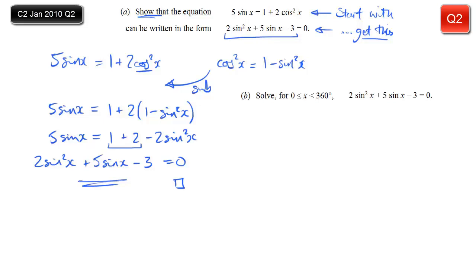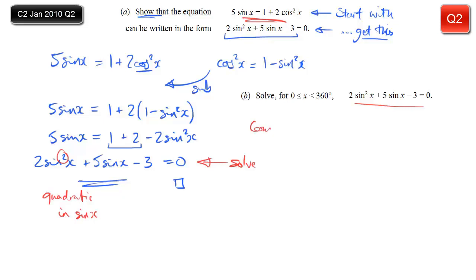Part B, we're asked to solve, for that range of x, this equation here - which we know we've just shown is equal to the equation that we started with. Let's have a look at the equation. It's a quadratic in sinx. You might not need to do a substitution here, but I like to compare it with the same quadratic but with a different variable, a simpler one. So I use capital X, with the same coefficients 2, 5, and minus 3, replacing sinx with capital X.